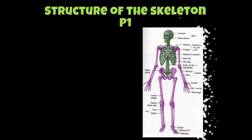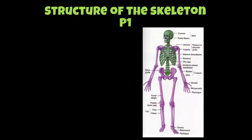First of all, we are going to look at the structure of the skeleton. In doing this you will achieve P1 for your assignment. As you can see on the screen just now, you have the skeleton labeled. So can you use the blank diagram that I have given you and label the bones that you can see on the screen?